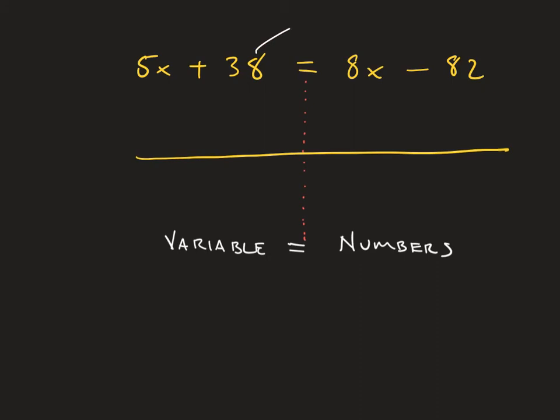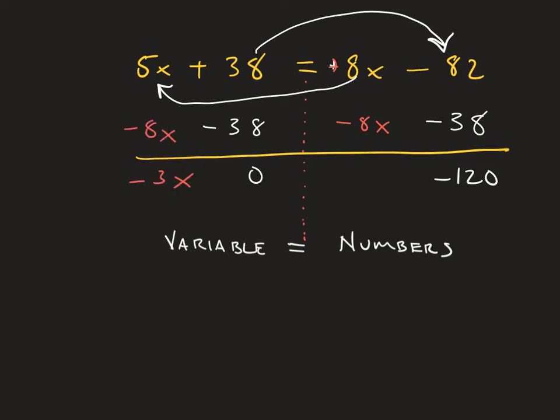So remember, again, we want to get the numbers onto one side and the variables onto another side. We need to move them over. And to move them over, we basically need to cancel them out by making them 0. So starting with my numbers, I'm going to subtract 38 from both sides. And I'll get 120 on the one side, 0 on the other side. And the hard part for most of you, I'm going to subtract 8x because this is a positive 8 up top from both sides. And I'll get minus 3x on the other side.